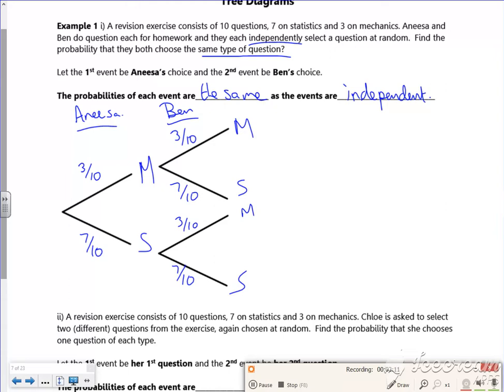So it says, what am I asking? Find the probability that they both choose the same type of subject. So what I'm looking at is they both choose mechanics and they both choose statistics. So the probability of Anissa and Ben choosing mechanics is going to be...